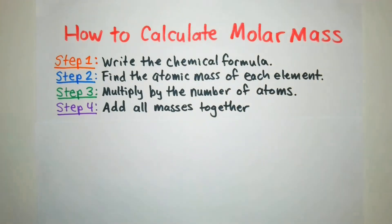Okay so I like to use four steps in my system to calculate a molar mass. First thing that I do is I write the chemical formula. After that for step two I find the atomic mass of each element. For step three I multiply by the number of atoms for each of those elements and for step four I add all the masses together.